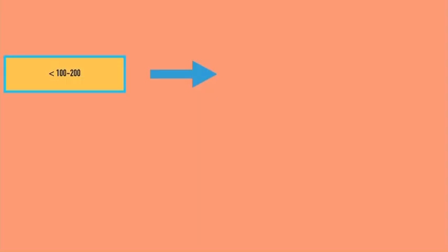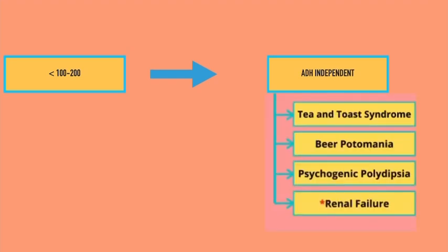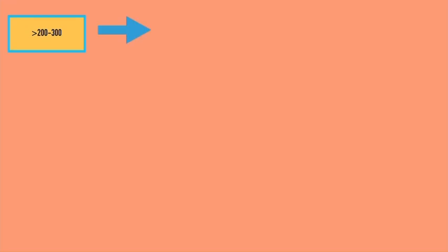In case of ADH-independent hyponatremia, urine osmolality will be less than 100 to 200. If the urine osmolality is more than 200 to 300, it means hyponatremia is ADH dependent.